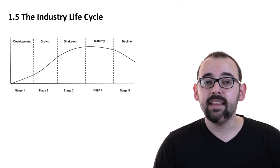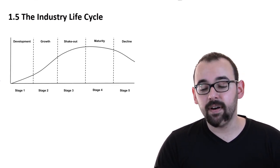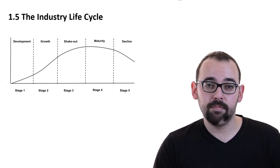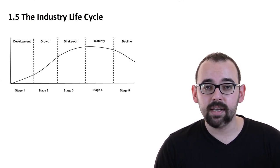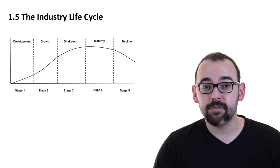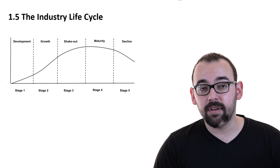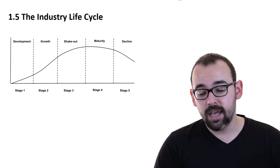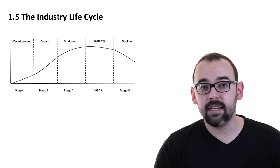As you can see, industry life cycle consists of five stages. You might be able to find some other models, they are more or less similar, so it really depends upon you which one you choose, but it's a very useful model. Stage 1 is development, stage 2 is growth, then we have a shakeout stage, then we have maturity and decline stage.